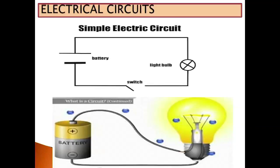Let's look at an example of an electrical circuit. We have a simple electrical circuit with one battery, a bulb (which we can also call a globe or a lamp), and an open switch. If we were to close the switch, the bulb will go on; if we open it, it will go off.